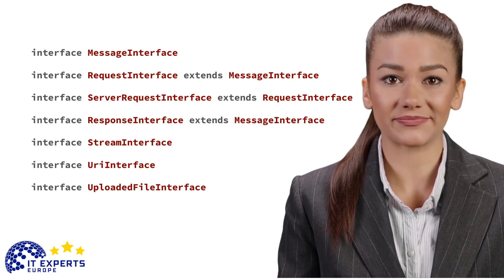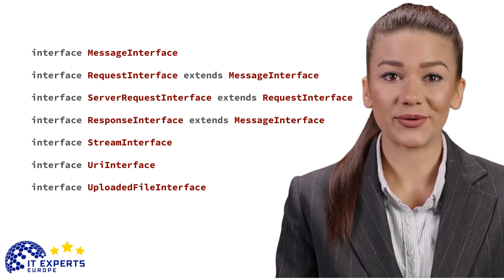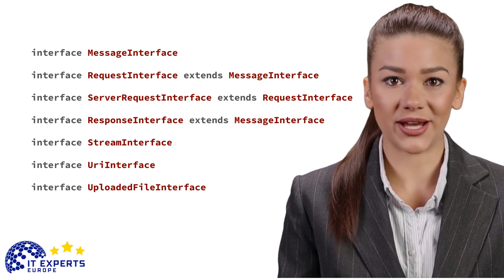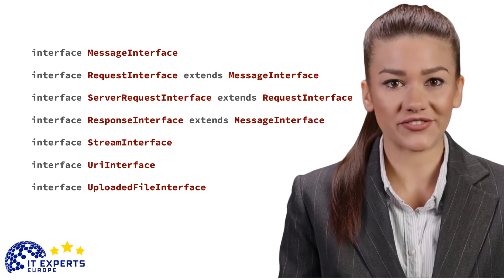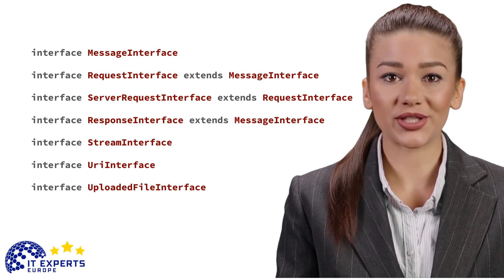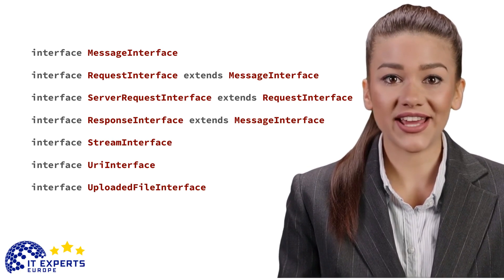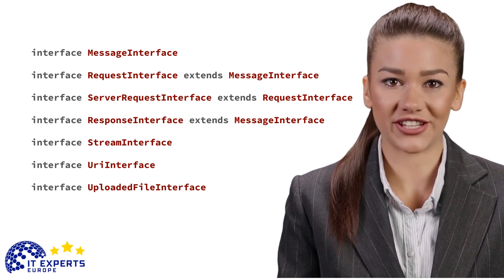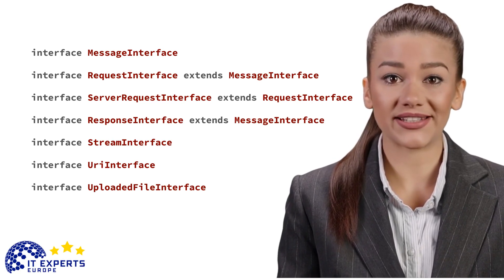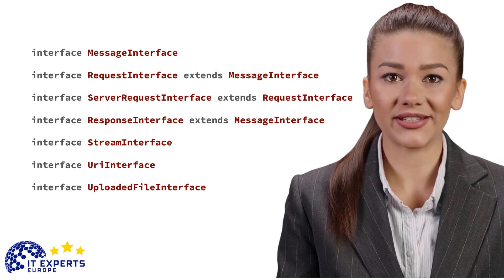URI Interface: Value object representing a URI. This interface is meant to represent URIs according to RFC 3986 and to provide methods for most common operations. Additional functionality for working with URIs can be provided on top of the interface or externally. Its primary use is for HTTP requests, but may also be used in other contexts. Instances of this interface are considered immutable. All methods that might change state MUST retain the internal state of the current instance and return an instance that contains the changed state.